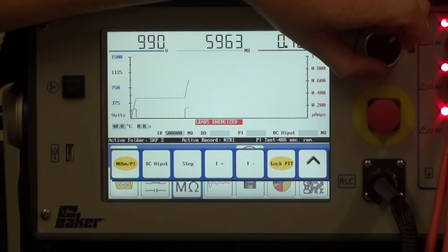As you can see, the voltage level is increasing and the current leakage is increasing also. Once we reach our target voltage, we can then activate the DC high pop button.